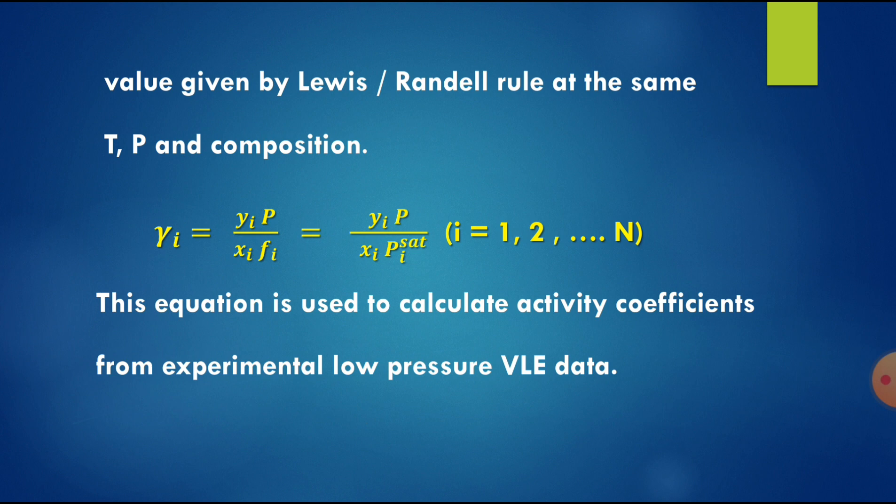Considering the above equation, gamma_i becomes equal to y_i P divided by x_i F_i, which equals y_i P divided by x_i P_i sat. Here F_i is replaced with P_i sat, which we have already seen in the liquid phase properties. This equation is used to calculate the activity coefficients from experimental low-pressure VLE data, allowing us to calculate activity coefficients for different species i from 1 to n.